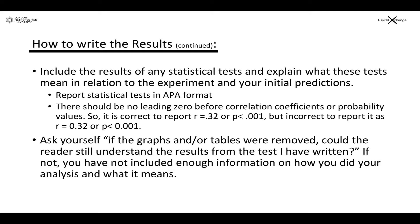For example, there should be no zero before the decimal point in correlation coefficients or probability values. So as you can see on the screen, it is correct to report R equals .32 or P is less than .001, but incorrect to report it as R equals 0.32 or P is less than 0.001.